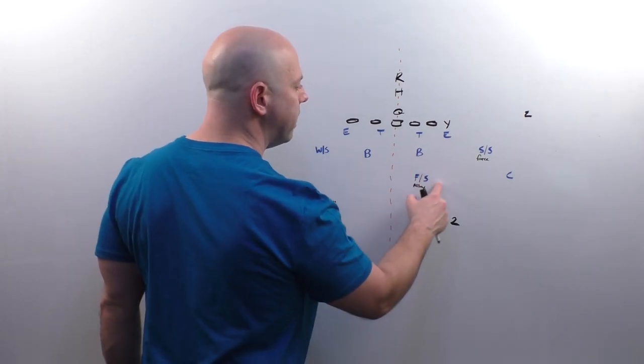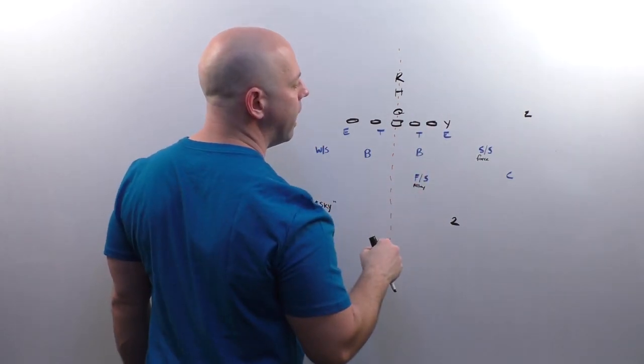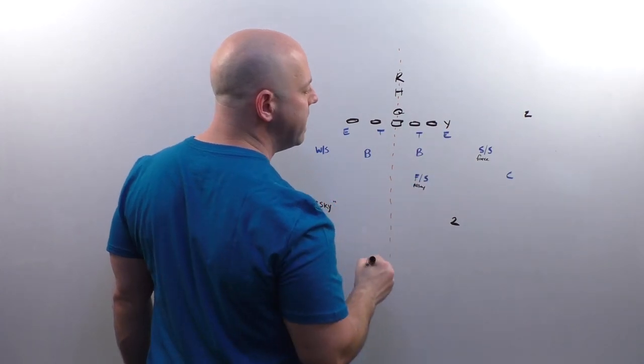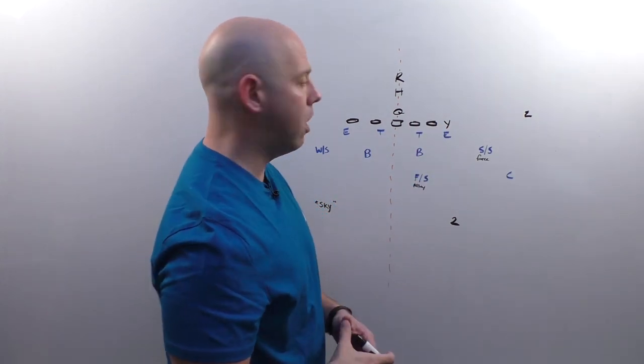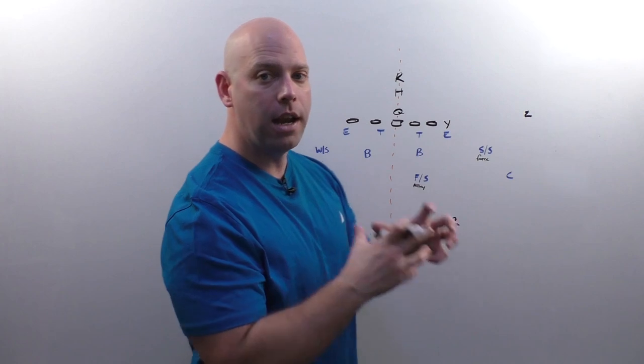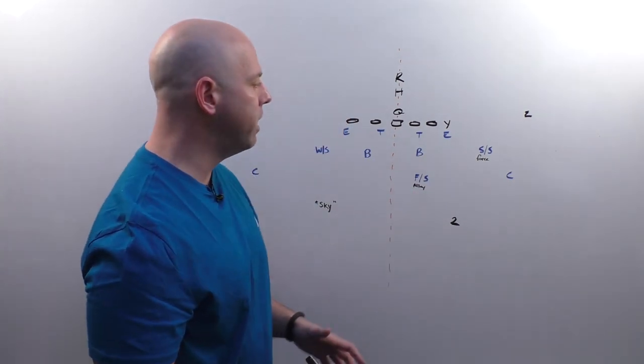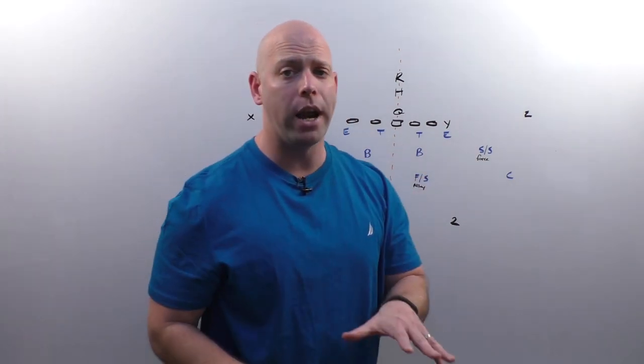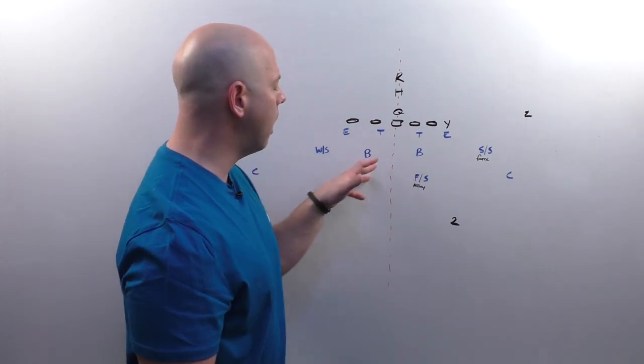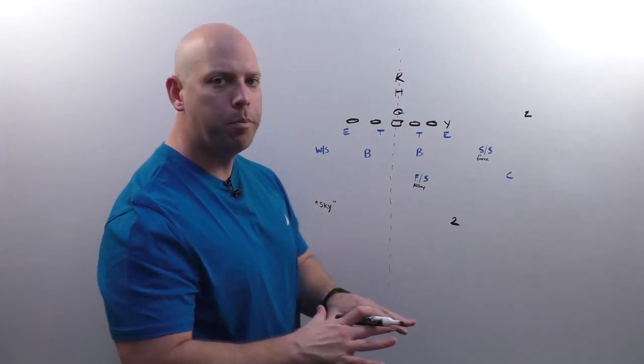The free safety is going to line up with a tight end in a pro set. He's going to be lined up over top of B gap. He's going to be about eight yards off. He is a run stopping player.